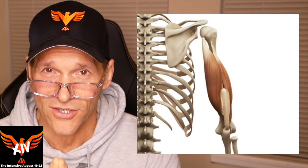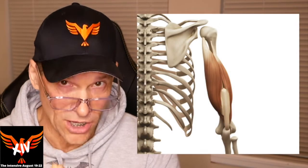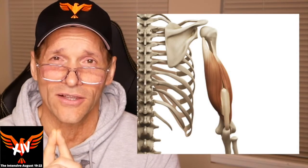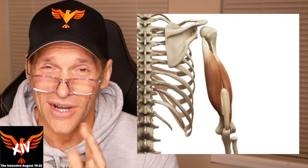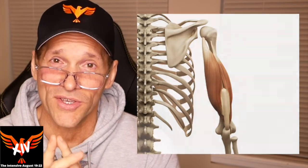So remember, everything moves on helical angles. The elbow joint moves on a helical angle. So triceps is a twister.